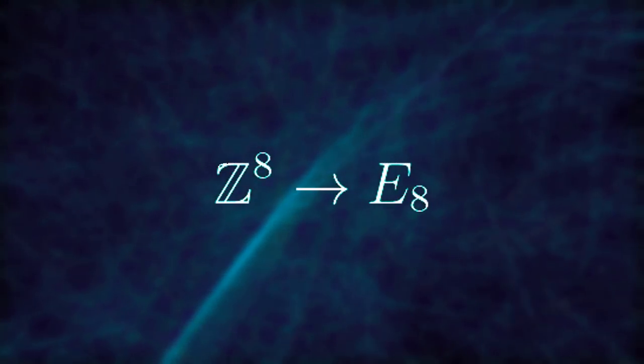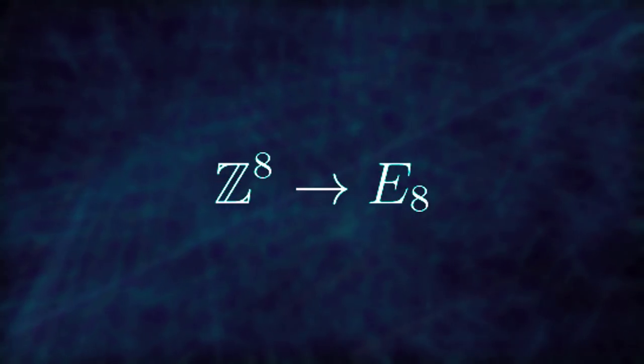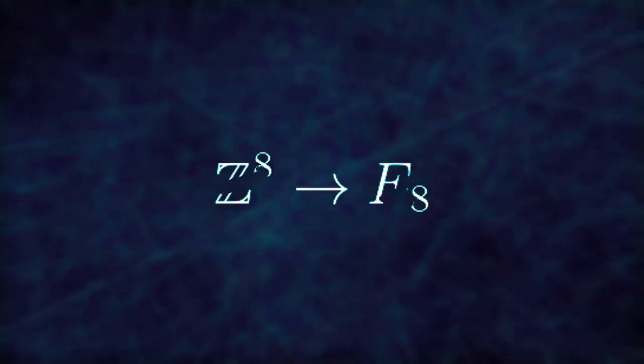Incidentally this trick of throwing away half the lattice and adding half of something back else can also be used to construct the E8 lattice. So if we take the sum of eight copies of Z and throw away half of it and add in the translates by this as before we just get the E8 lattice in eight dimensions.